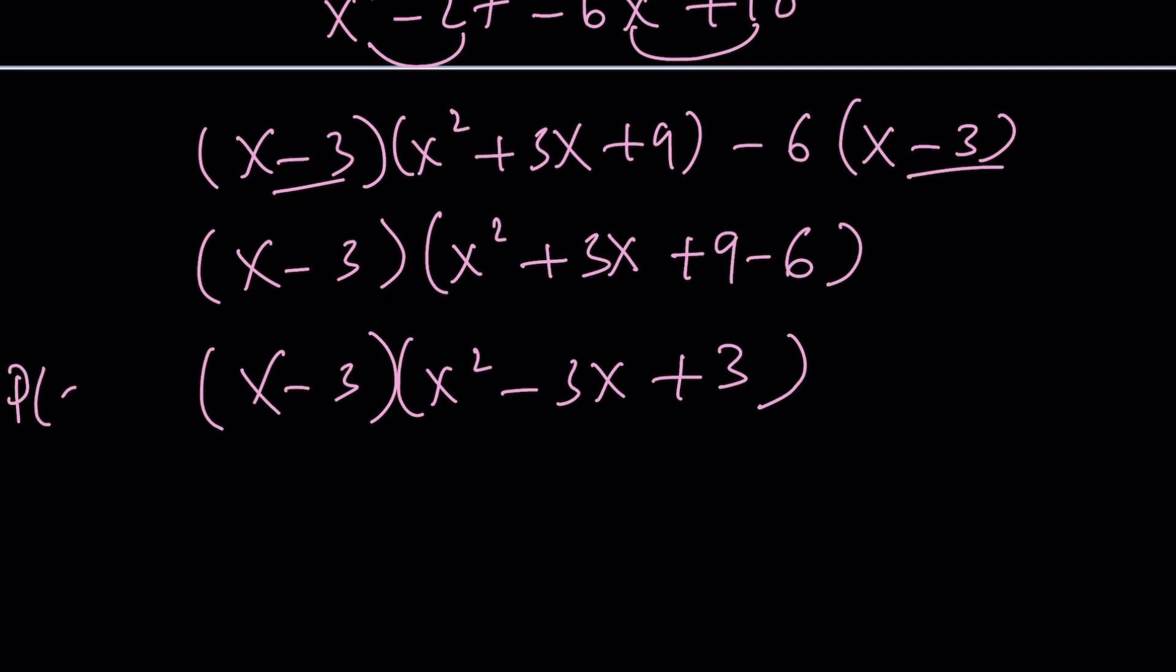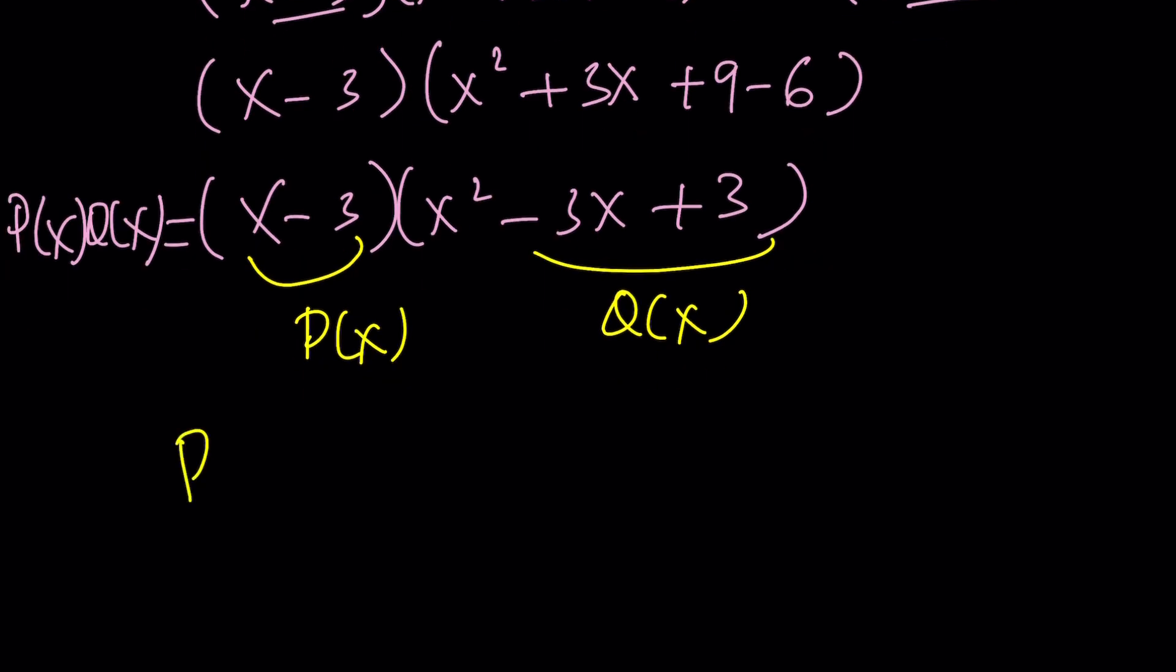So this is P(x) times Q(x). What does this tell you? Well, one of them is probably P(x) and the other one is Q(x) and vice versa. But you need to check with the second equation, which is actually very easy to do. If you add P(x) and Q(x), you get x - 3 plus x² + 3x + 3.